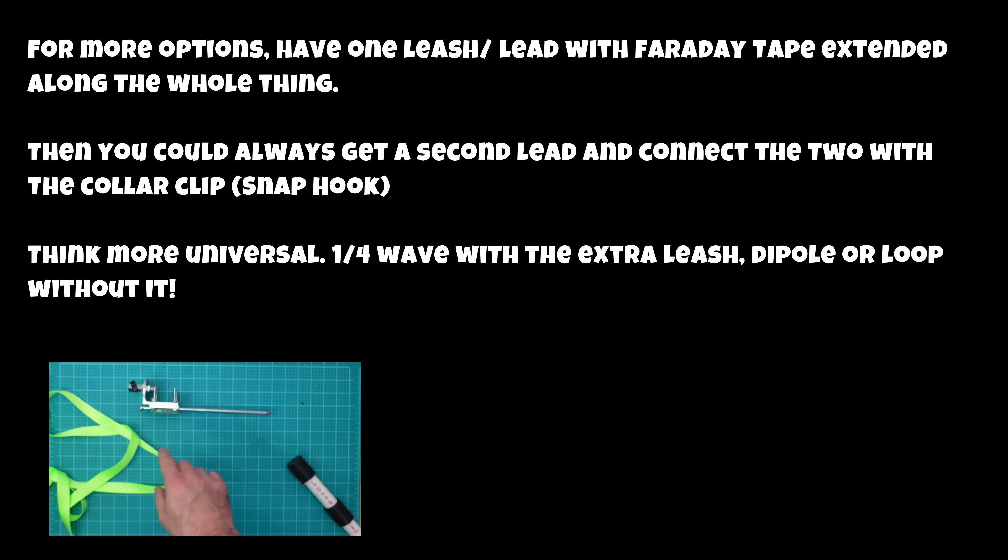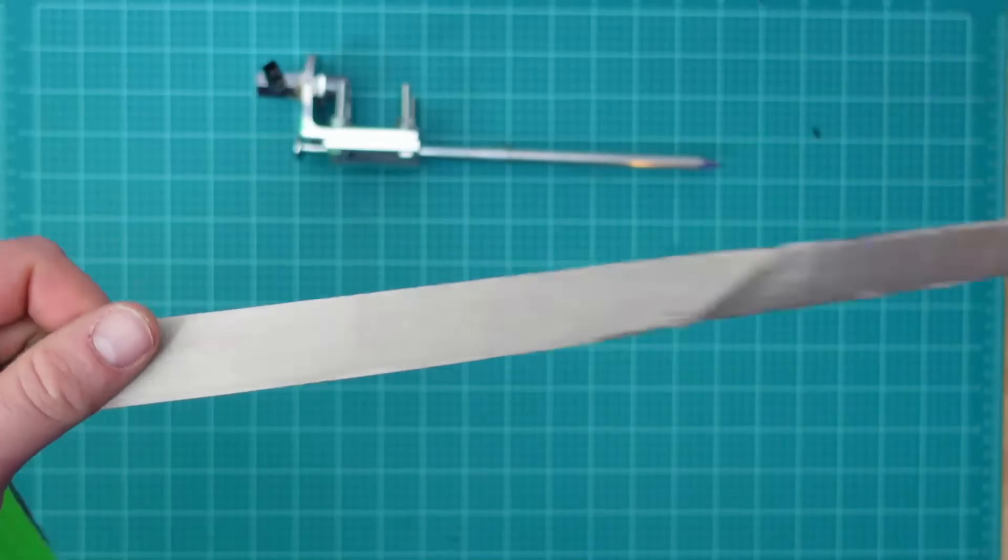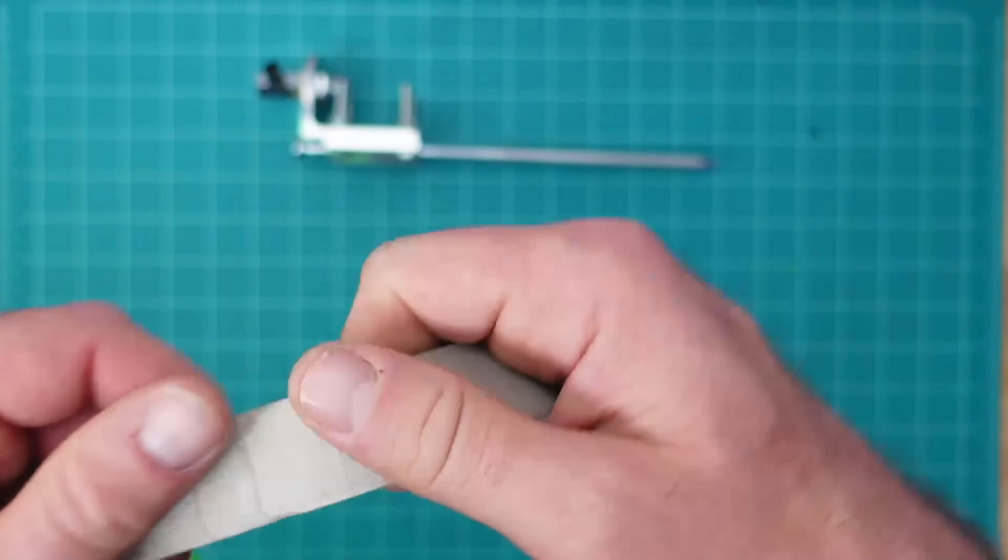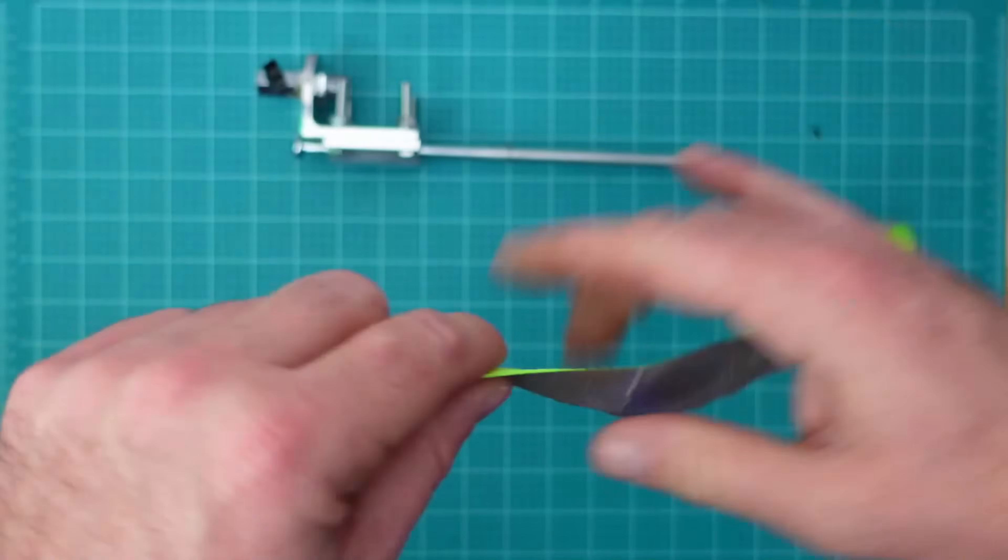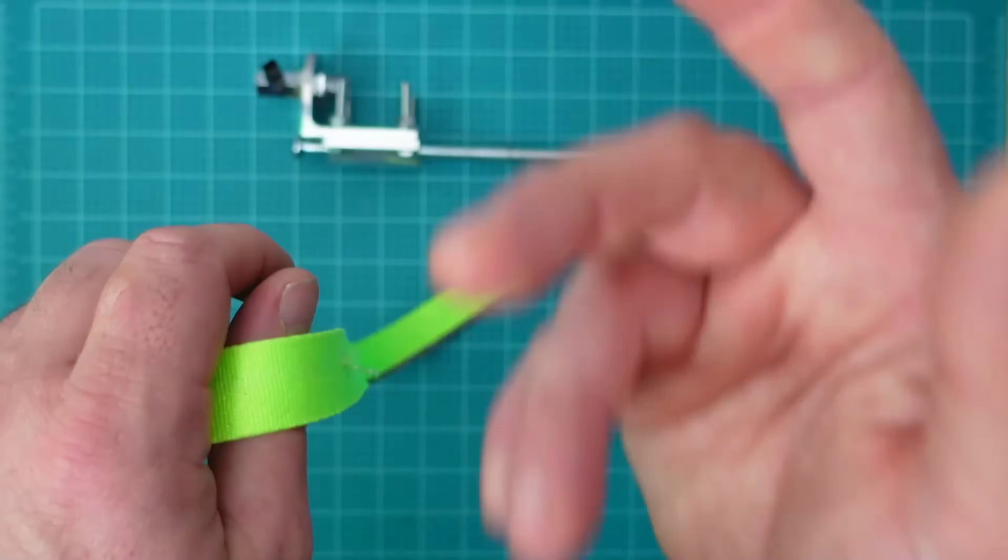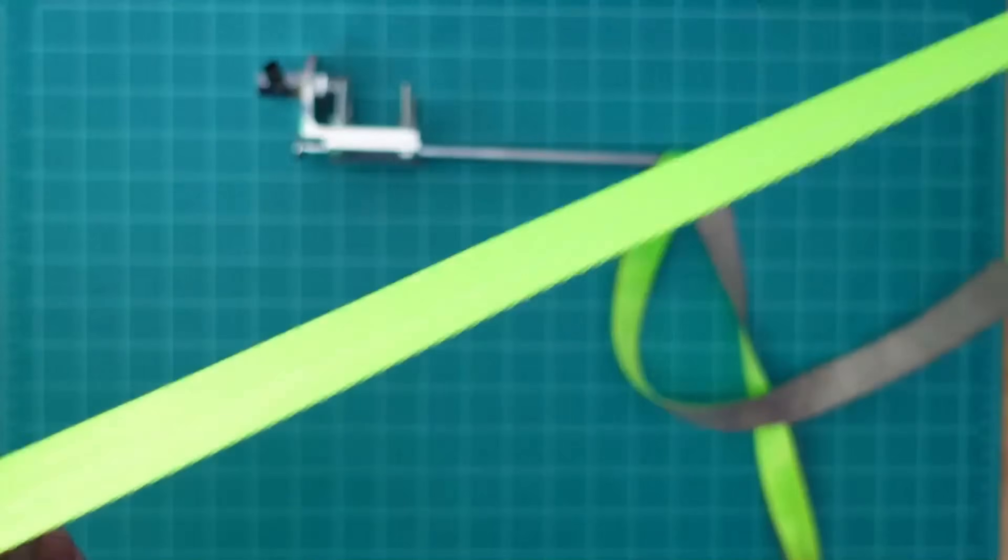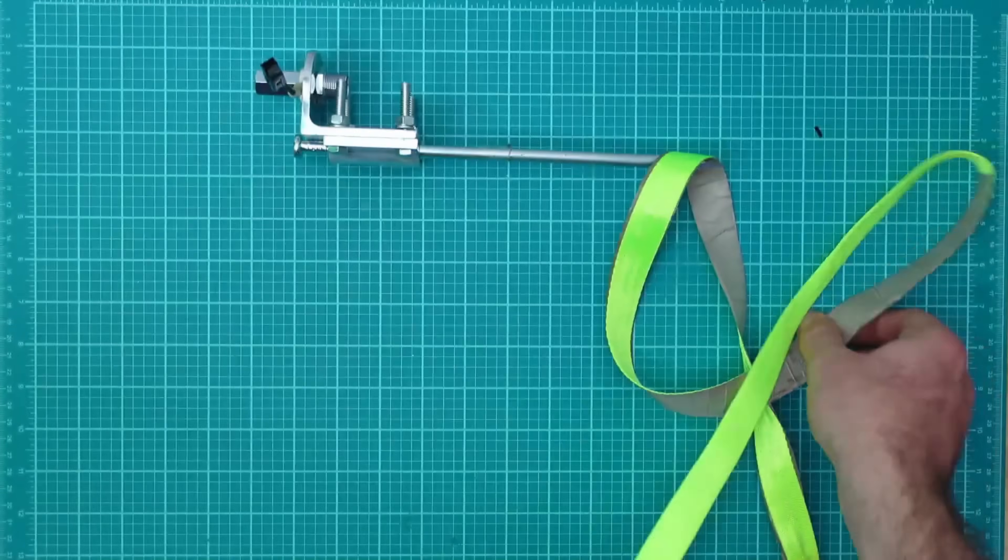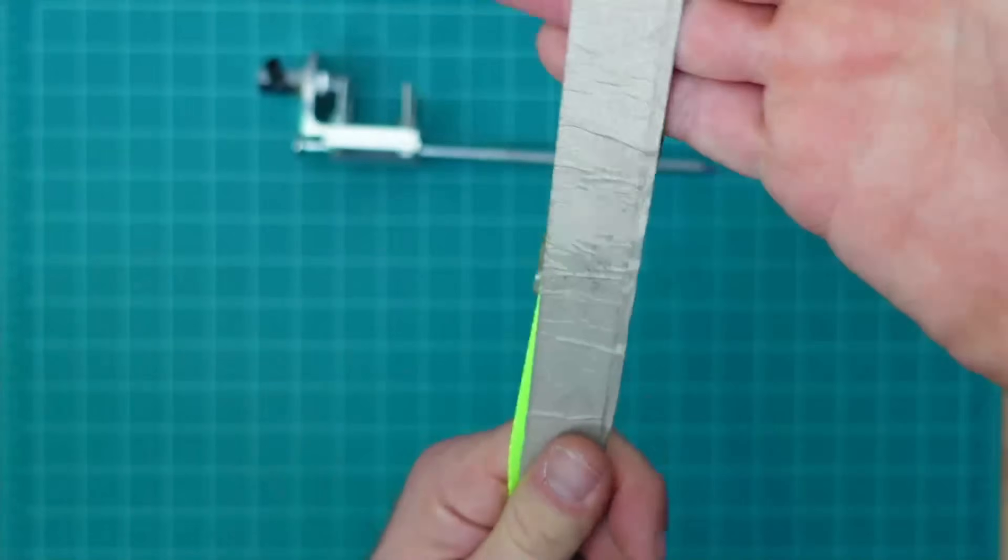But again, you might want that. When everything is said and done, we should have, in today's scenario, about 35 feet of Faraday tape attached to our dog leash or dog lead. And then, of course, I have a bunch of extra that I'm going to be able to throw over the tree and it doesn't then become part of the antenna, right?